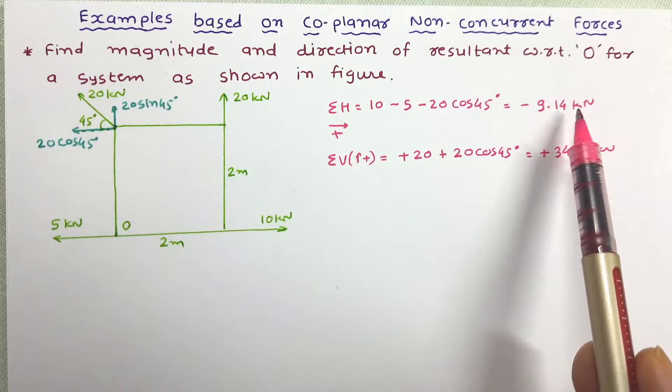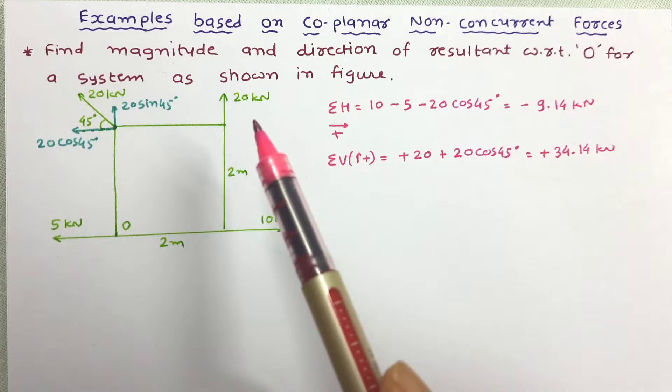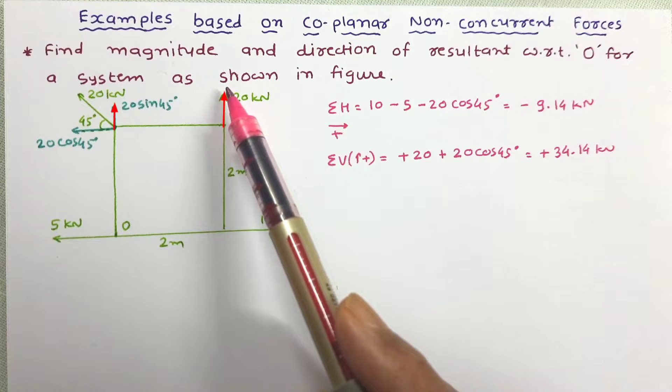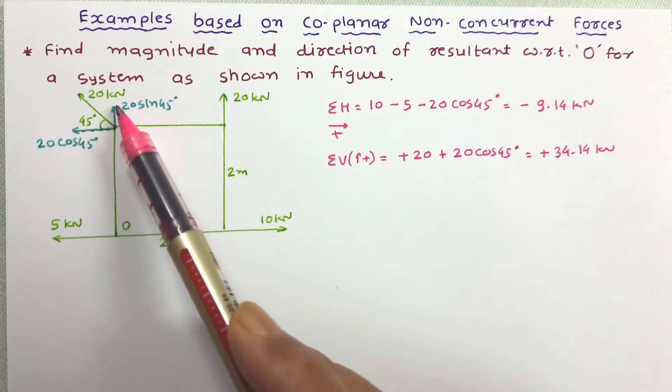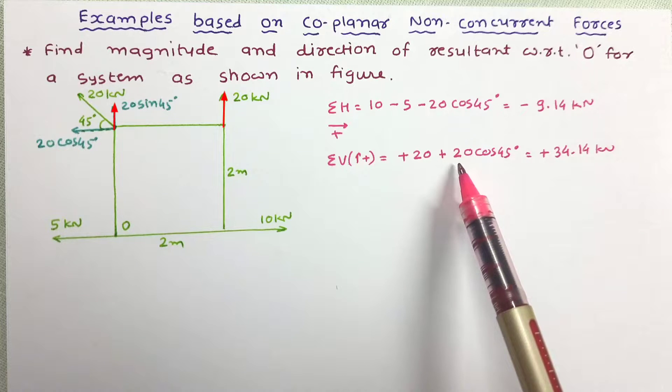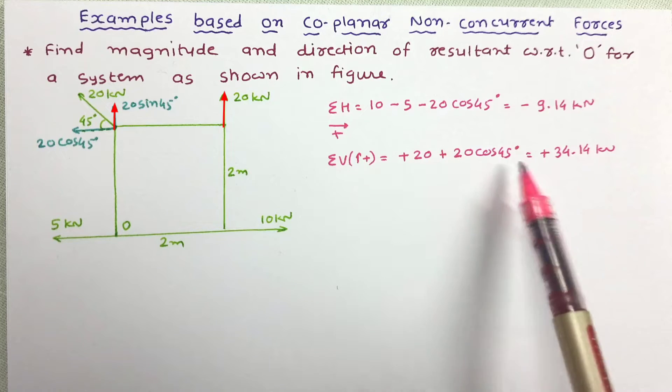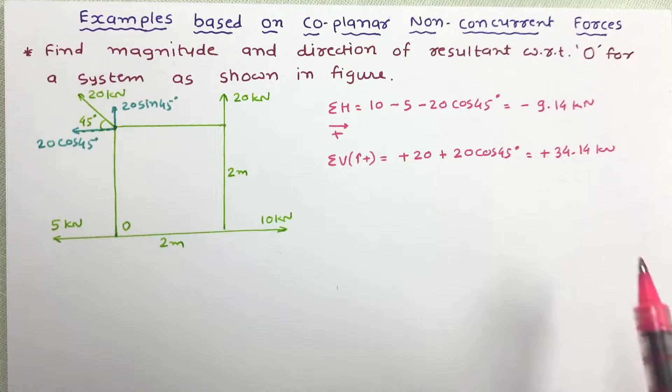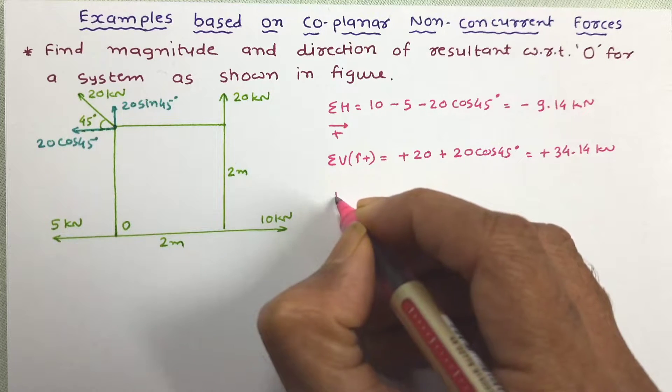Same way we have worked out sigma v. There are two forces in vertically upward direction: 20 kilonewtons and 20 sin 45 degrees. These two will be added and finally sigma v is 34.14 kilonewtons. Now from this we can easily determine resultant.